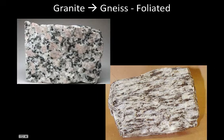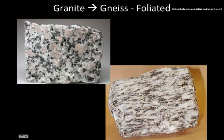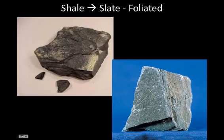Next we have granite, which turns into gneiss — a rock we studied with igneous rocks. When granite is squeezed under tremendous pressures, all the minerals line up into flat bands, making it a foliated metamorphic rock. Another example: the sedimentary rock shale, when compacted, turns into the metamorphic rock slate.